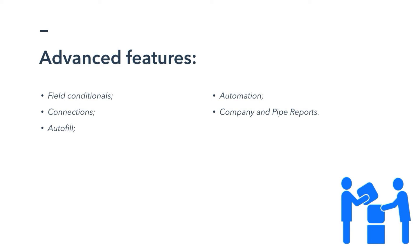And to automatically fill some of the fields when creating tasks related to the project or core actions. We're also going to use automation rules to move the main card from tasks to doing when one of the connected tasks is moved to doing, and to move the main card to customer approval when all connected cards are done in the squad pipe. And to help us keep track of all the activities, we're going to use pipe reports and company reports.